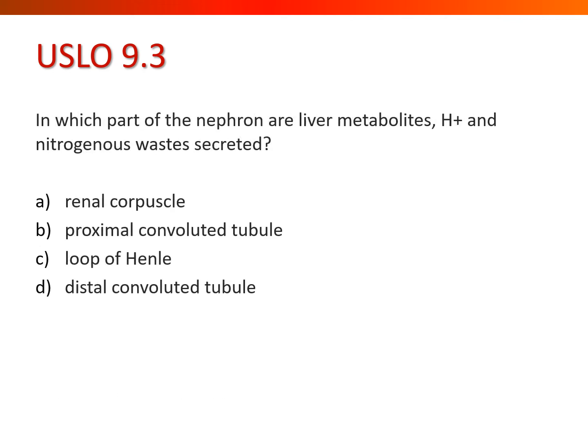In which part of the nephron are liver metabolites, hydrogen ions, and nitrogenous wastes secreted? If we think back to where the majority of reabsorption and secretion occur, we'd guess the proximal convoluted tubule — and indeed the answer is the proximal convoluted tubule.